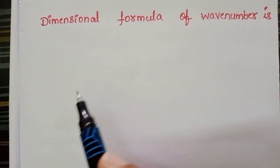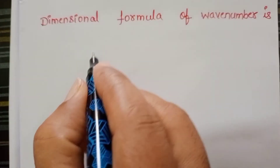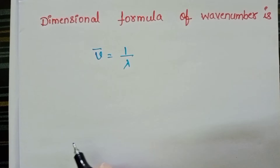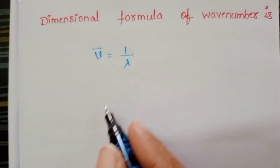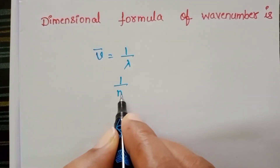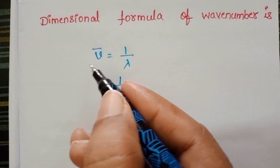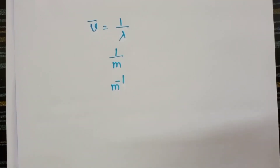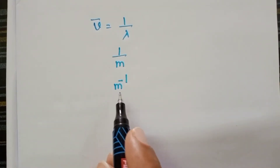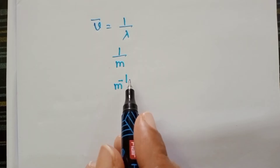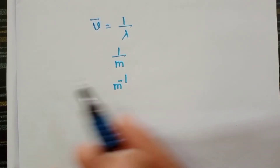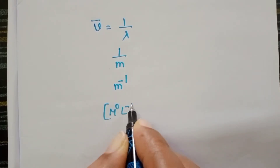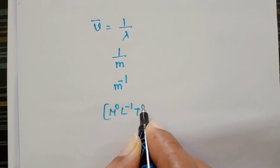The dimensional formula of wave number. Wave number is defined as the reciprocal of wavelength. The unit of wavelength is meter, so 1 divided by meter gives the unit of wave number as meter power minus 1. There is no mass and no time; length is raised to the power minus 1. So the dimensional formula of wave number is M⁰L⁻¹T⁰.